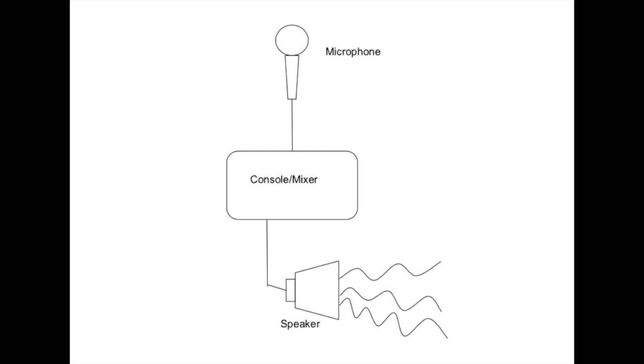You'll see signal flow diagrams or flow charts in most equipment manuals. They act as a roadmap to help you understand how to best use your signal at any point in the system, or how to troubleshoot problems when they arise. It's also a good idea to draw your own signal flow diagram of your studio or venue to help you visualize how signal travels through your system. Here's an example of the most basic signal flow chart that includes only the elements we've talked about so far: the microphone, the mixer, and the speaker.